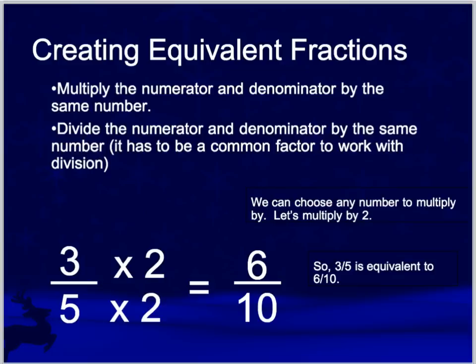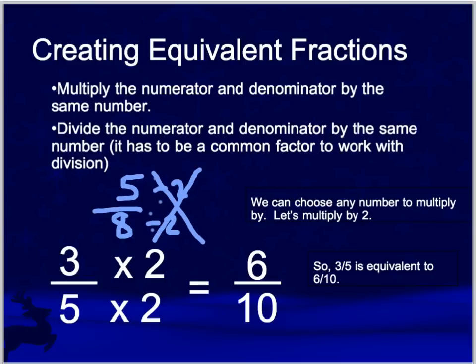What that means is you can't do something like this. If you wanted five-eighths, one of the factors of eight is two, but five is not divisible by two because they do not have a common factor. Five-eighths is actually in simplest form, so you can't do that.